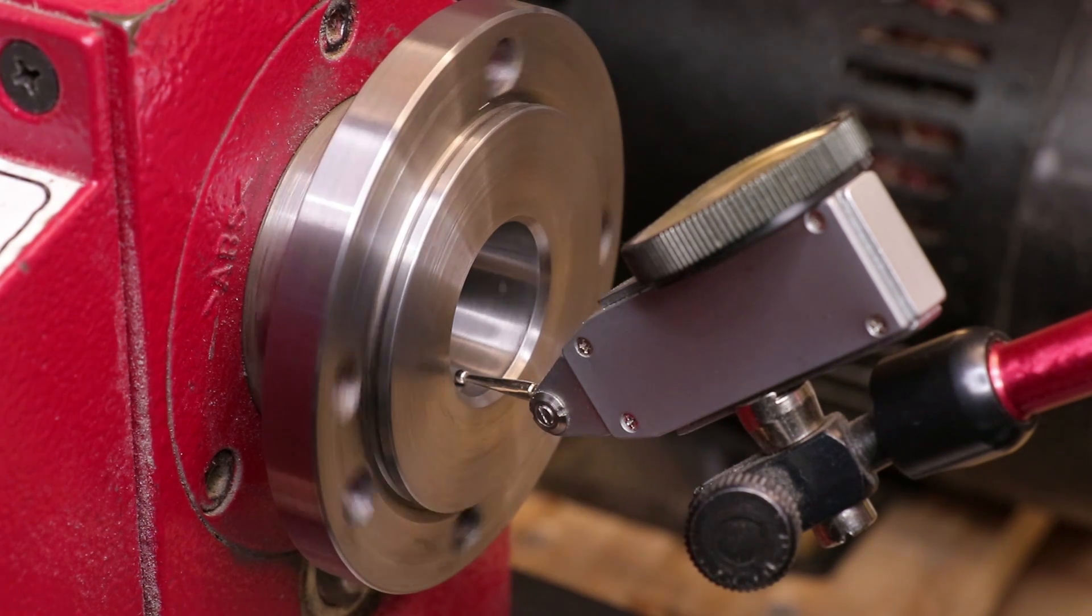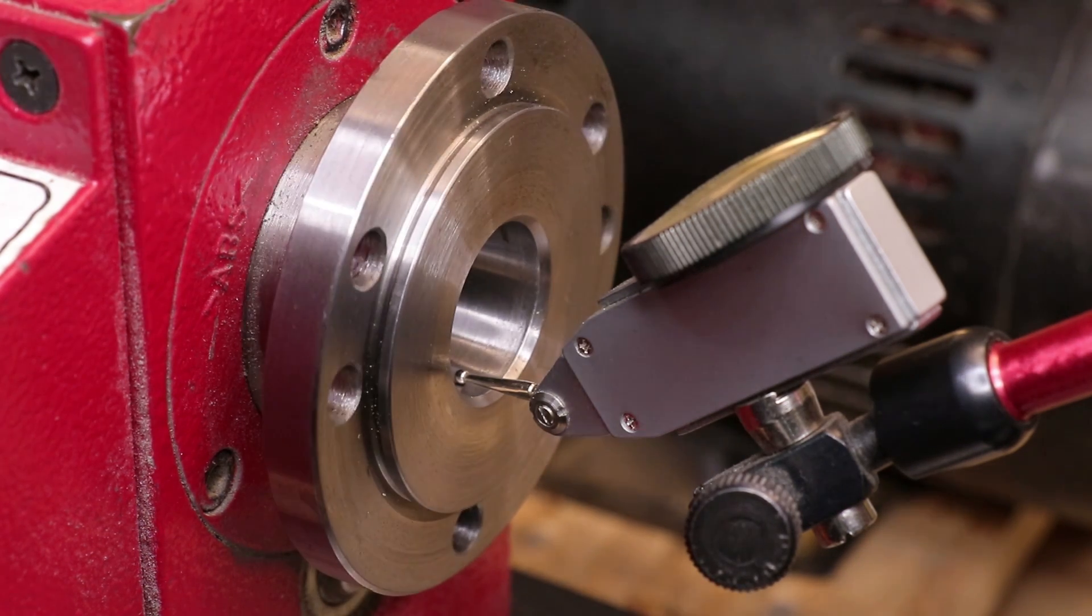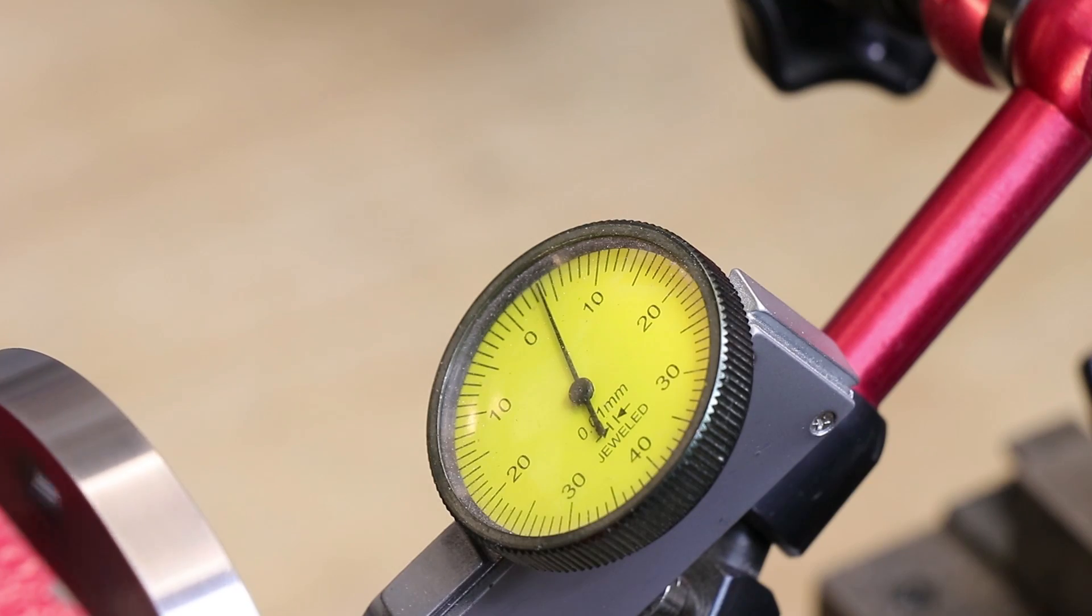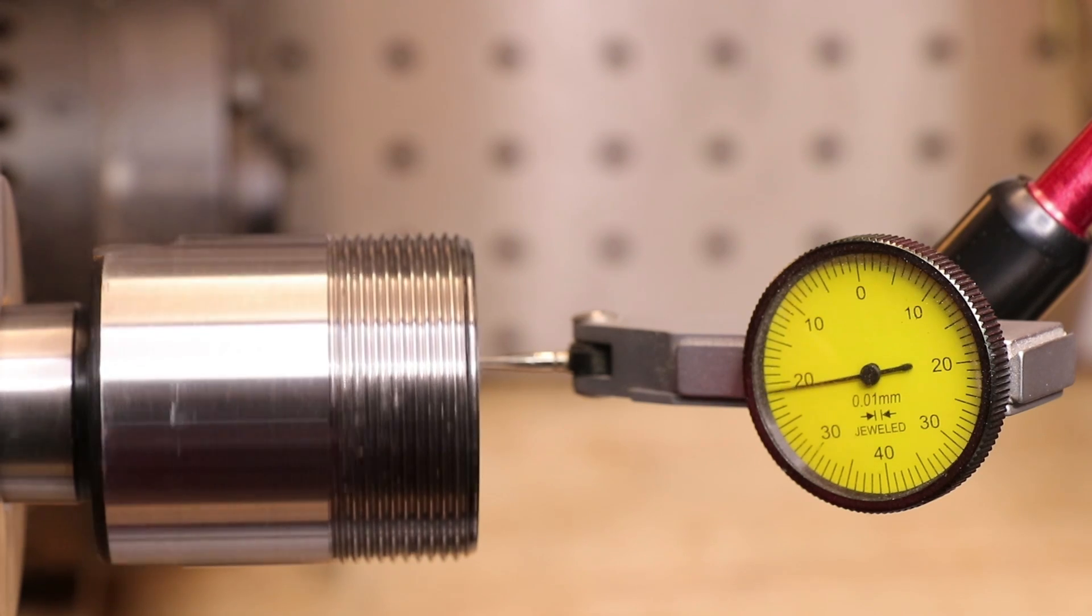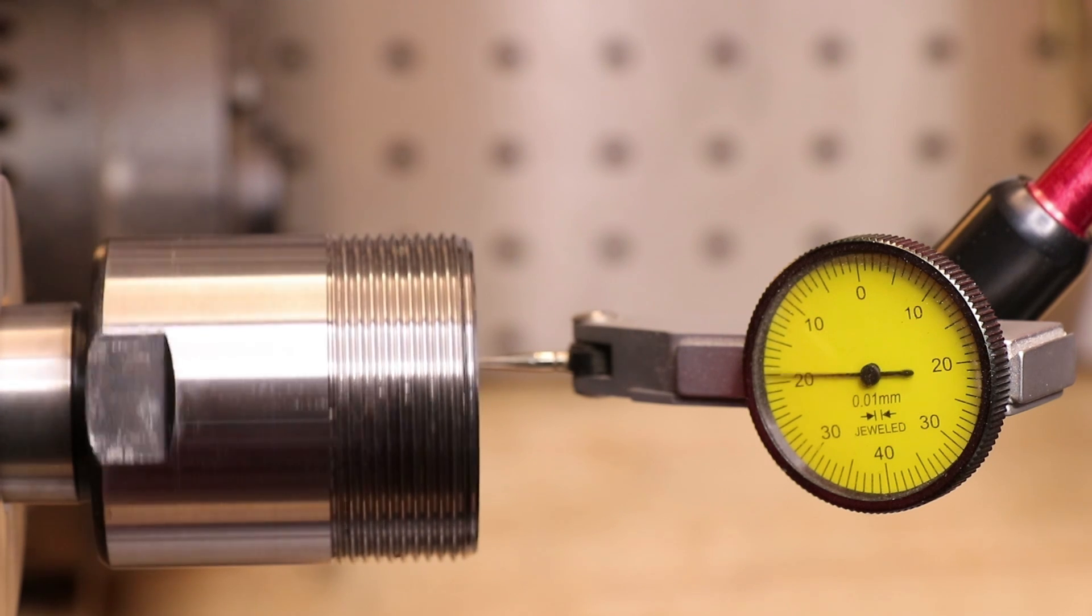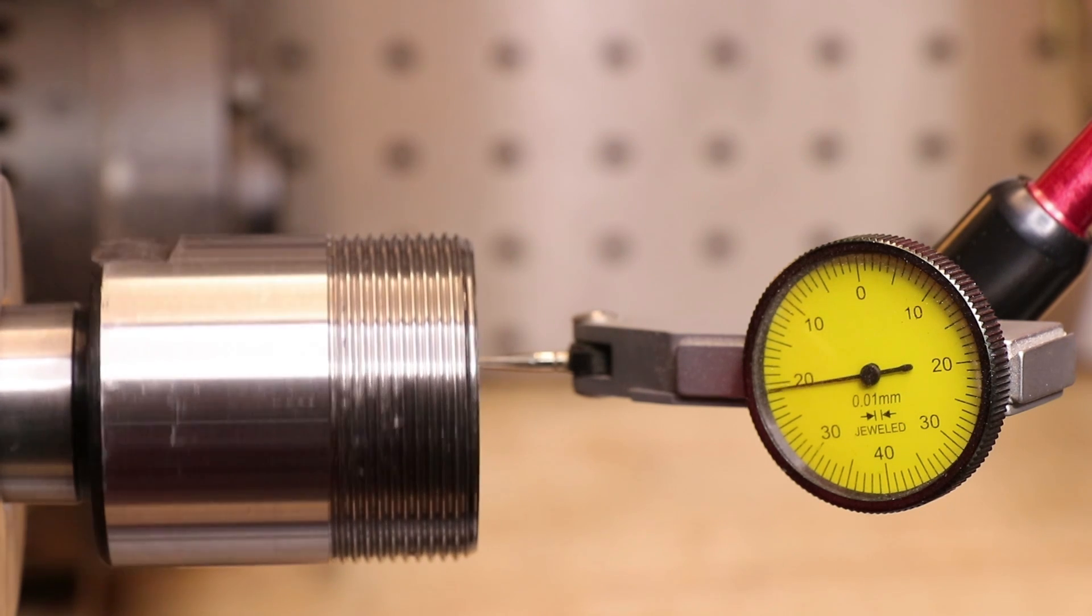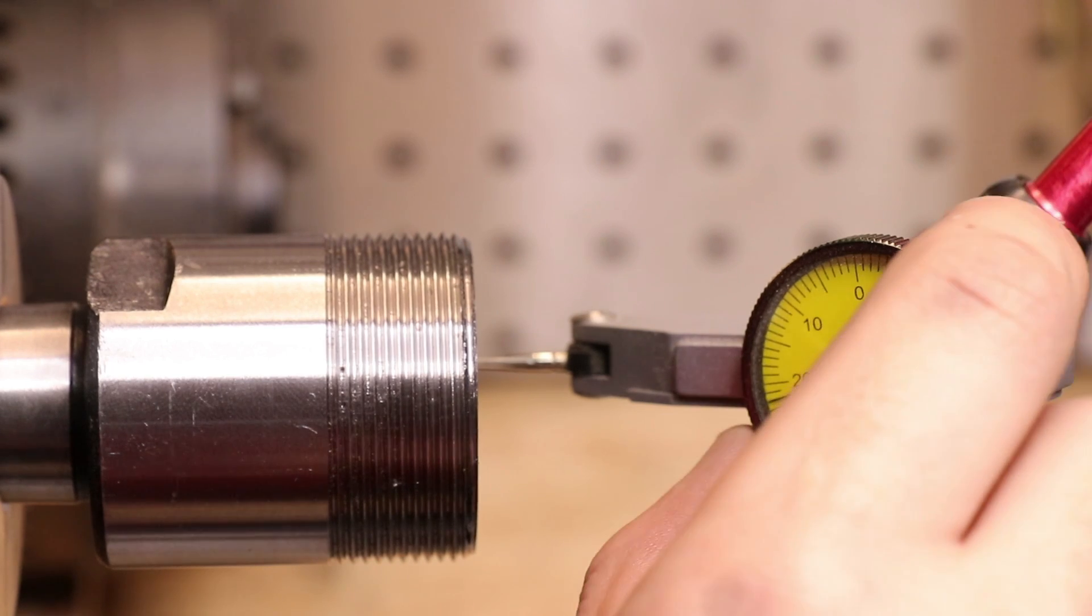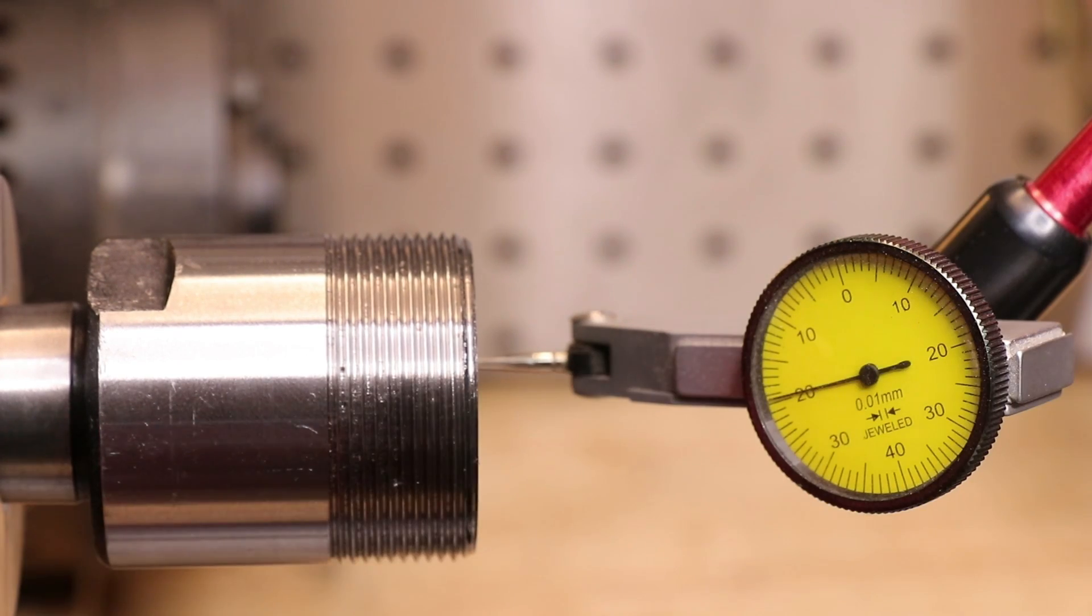For reference, the run out or I guess eccentricity of the taper in the lathe spindle measures at around 8 or so microns which is pretty good for stock bearings after two years though I do think they will need replacing very soon. The inside 8 degree taper of the collet chuck worryingly shows that the run out has jumped to about 40 microns and considering that the scroll chuck runs at about 60, this isn't a great improvement.